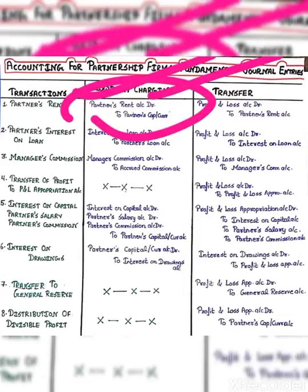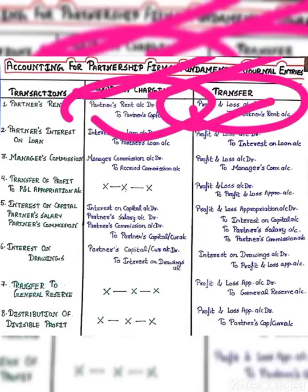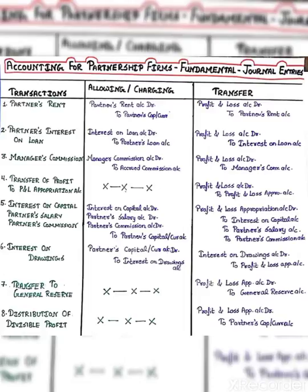So you will allow or charge the entry. And then at the end of the year, transfer is either in the P&L account or in the P&L appropriation account. So first you will see those things which are charged.